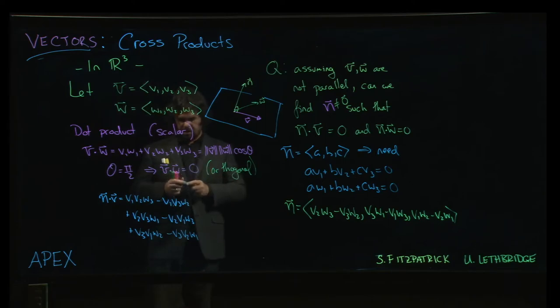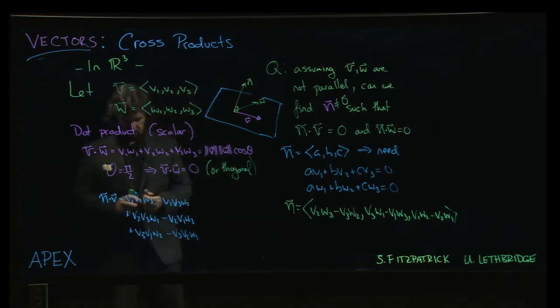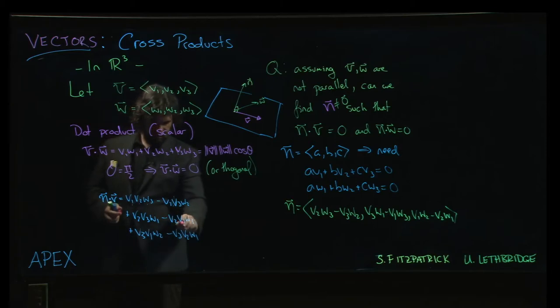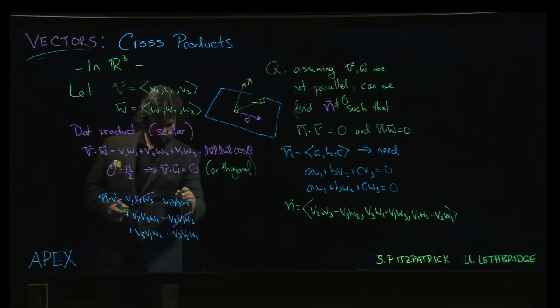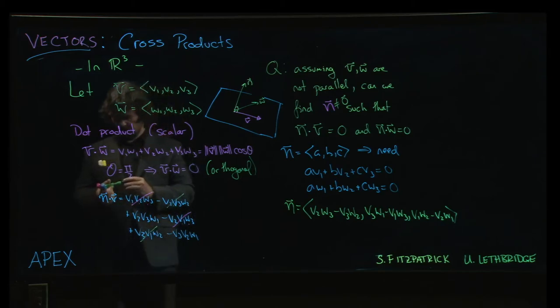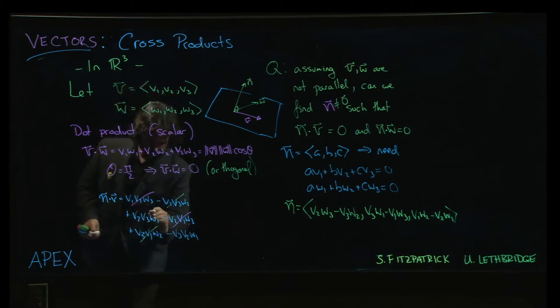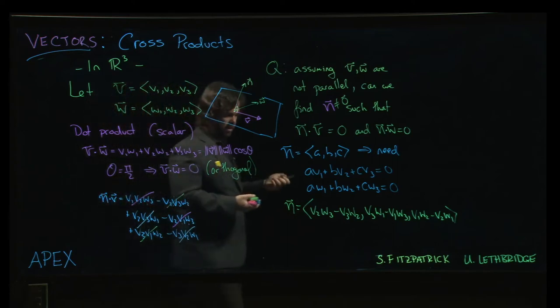So now you go through and you notice, okay, v1v2w3, v1v2w3, those cancel. And then v2v3w1, v3v2w1, those cancel. v1v3w2 and v3v1w2 cancel. Everything cancels. And if you do it with w, you find that you get the exact same thing.